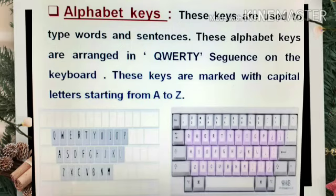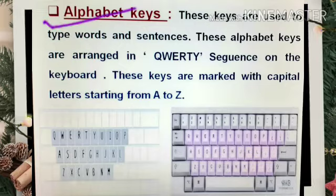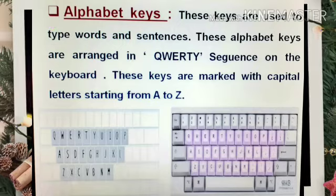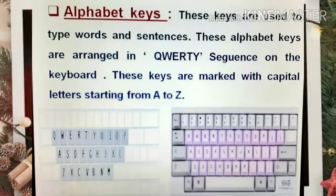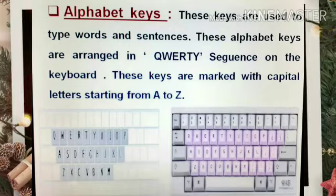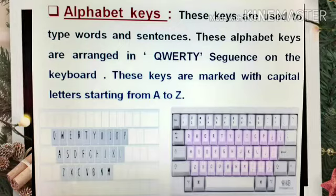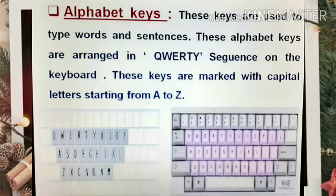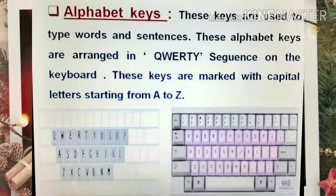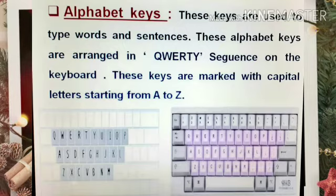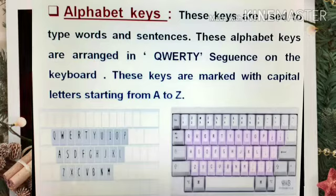Now come the alphabet keys. These keys are used to type words and sentences. These alphabet keys are arranged in a QWERTY sequence on the keyboard. They are marked with capital letters starting from capital A to capital Z. Identification of alphabet keys is very simple — all alphabet keys are written in capital letters from A to Z, but they are not in a proper serial order. They are in a QWERTY sequence, which means Q-W-E-R-T-Y.